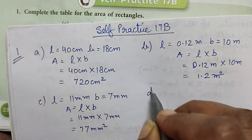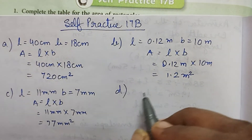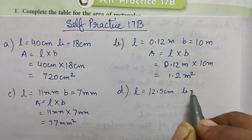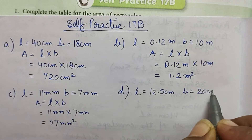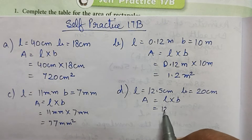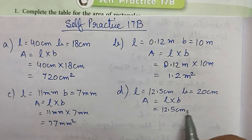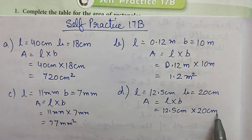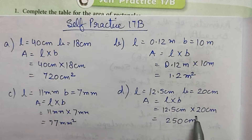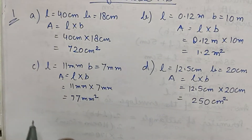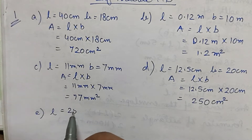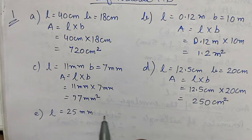Part d: length is 12.5 centimeter and breadth is 20 centimeter. Area is L × B, so 12.5 centimeter × 20 centimeter is equal to 250 centimeter square.